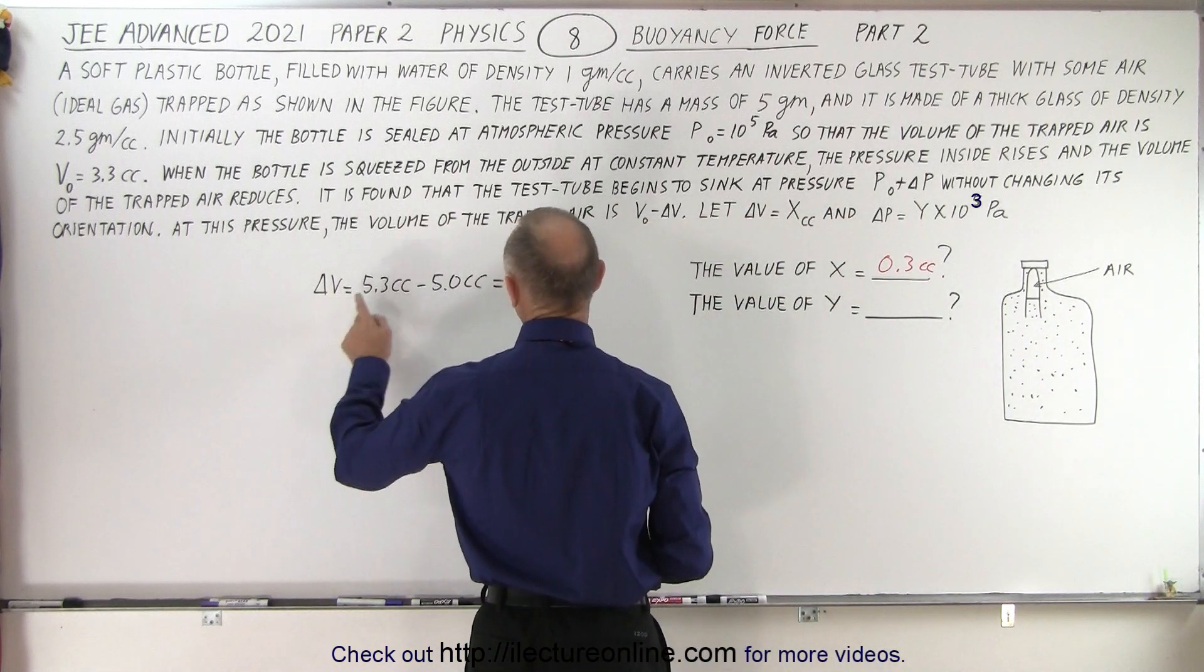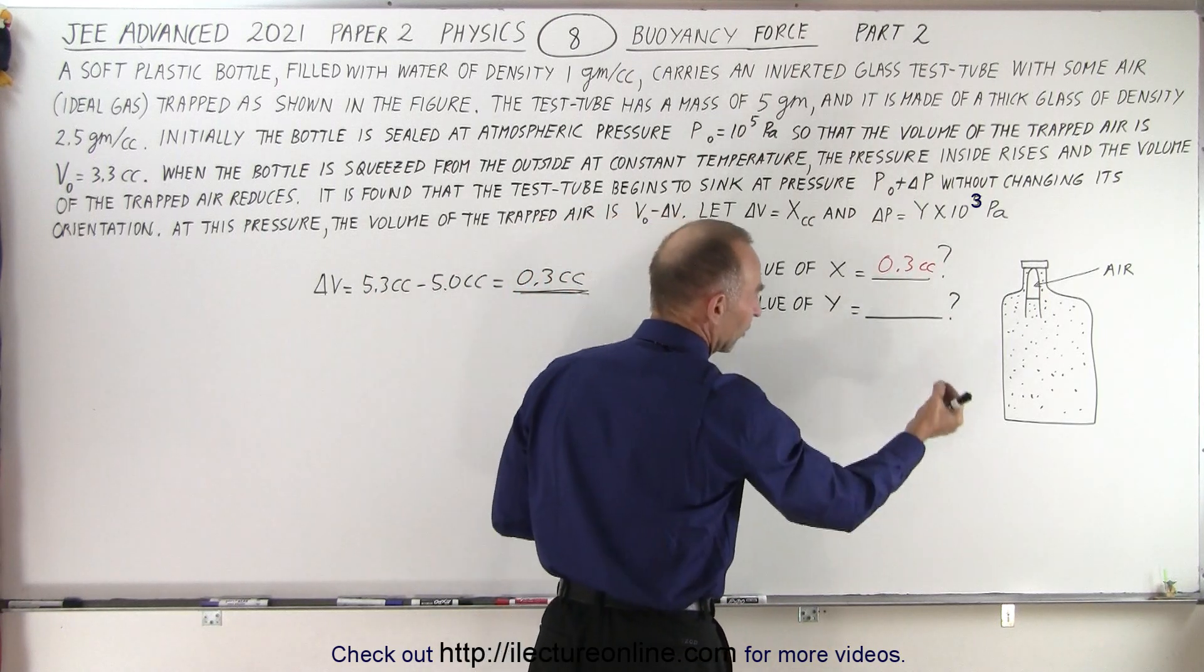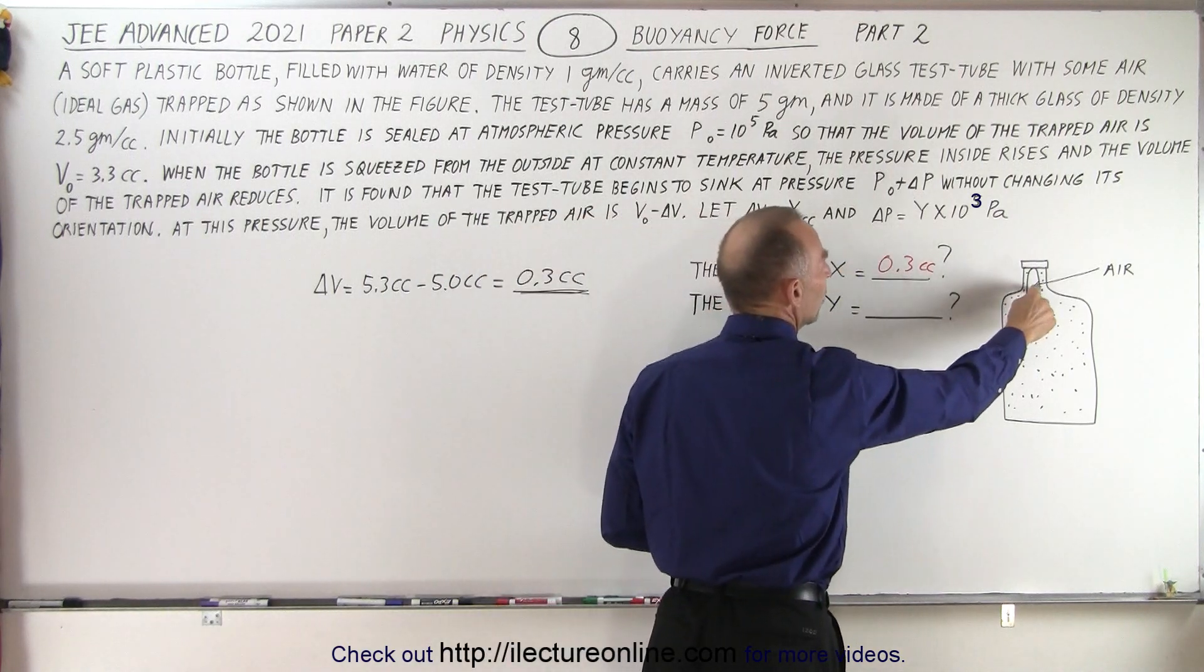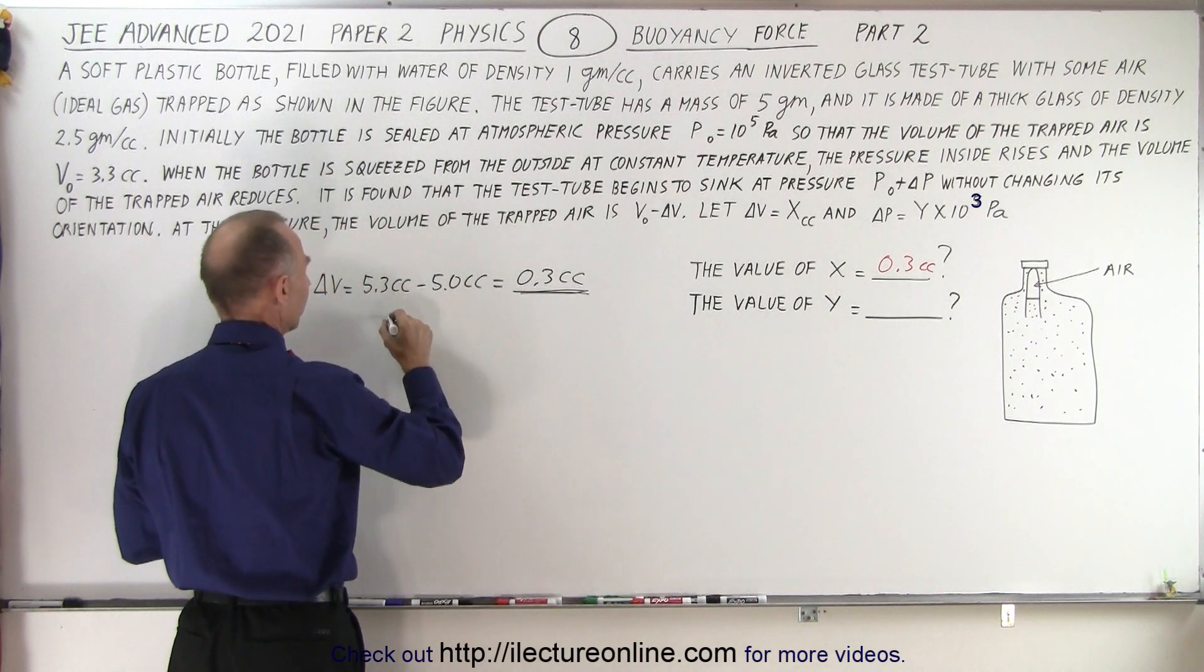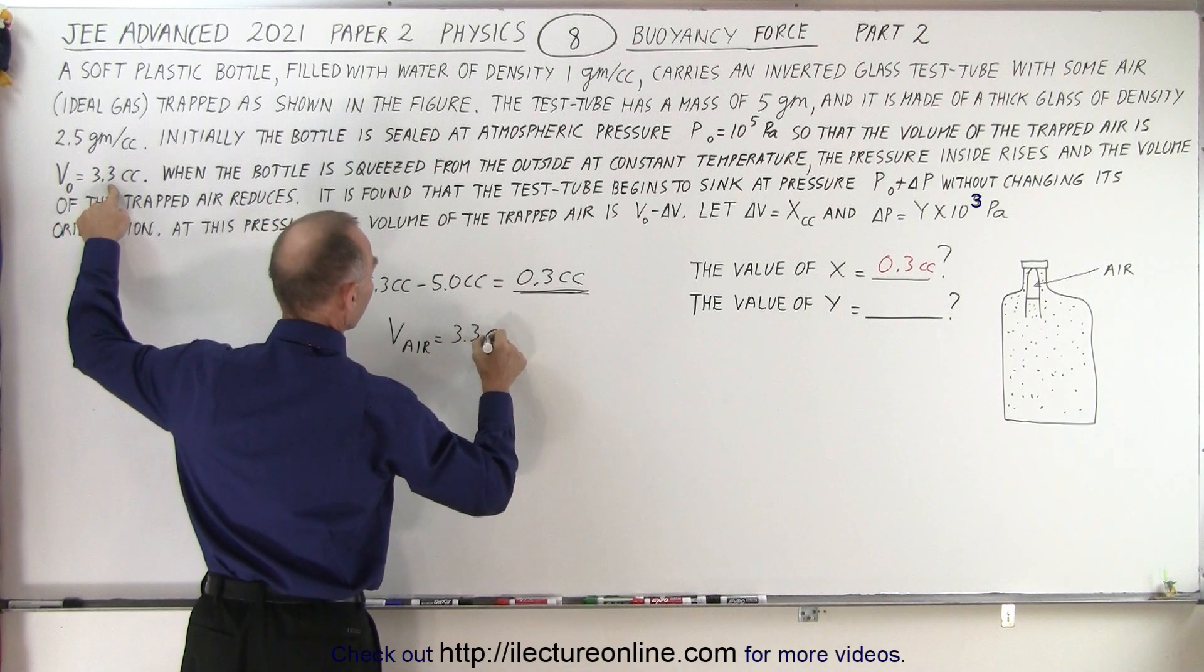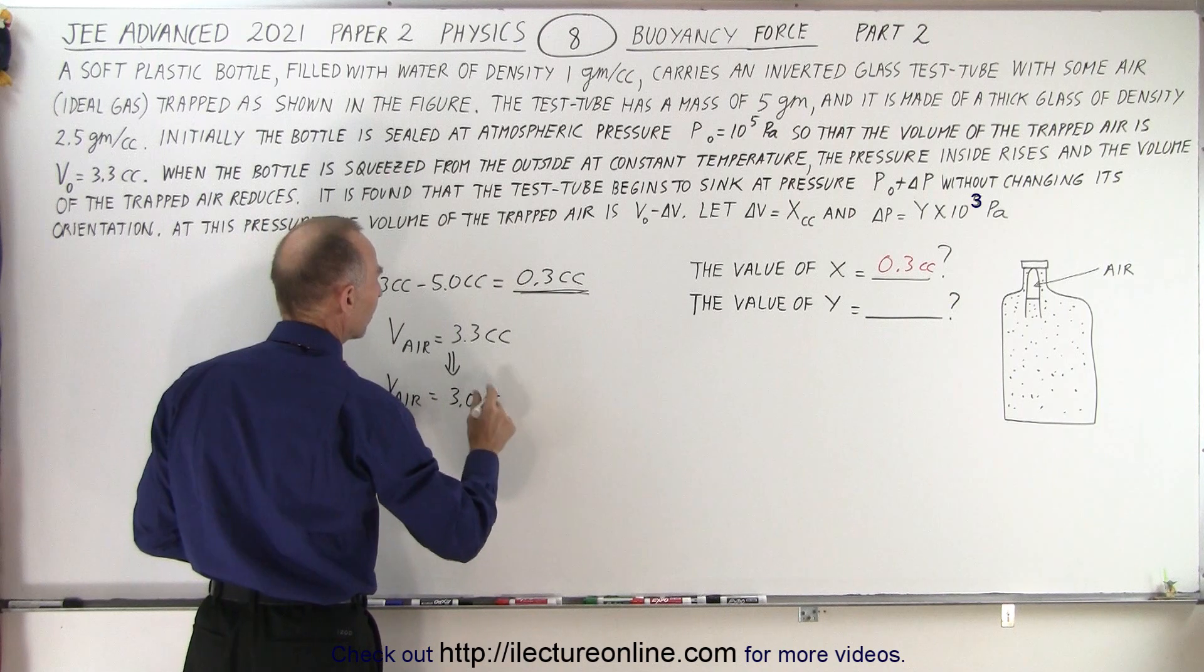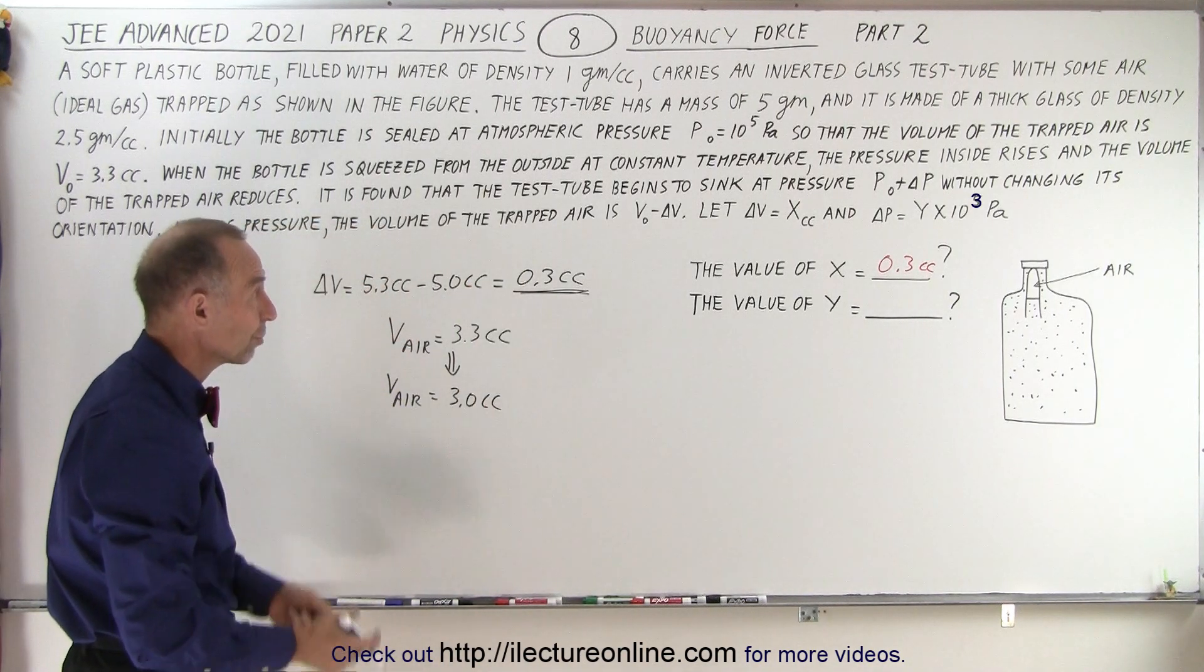There was sufficient amount of air to keep it floated at the top. We noticed that the total volume was 5.3 cc but if it was reduced to 5 cc the test tube will begin to sink. But in this problem, part 2, what we're trying to find is the change in the pressure required to change the volume of the air inside. The volume of the air started out at 3.3 cc's and now we have to reduce that to the new volume of air being equal to 3.0 cc's because then the test tube will start coming down. The question is what will be the change in pressure to accomplish that.